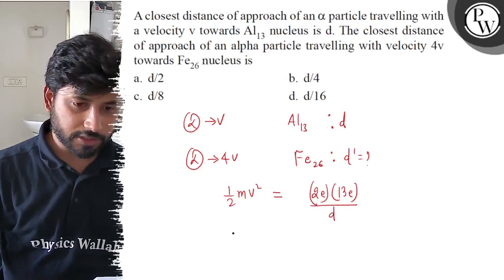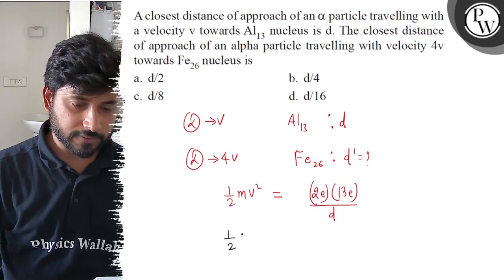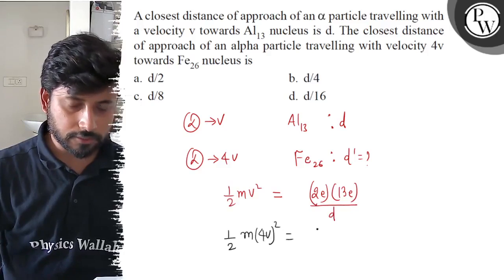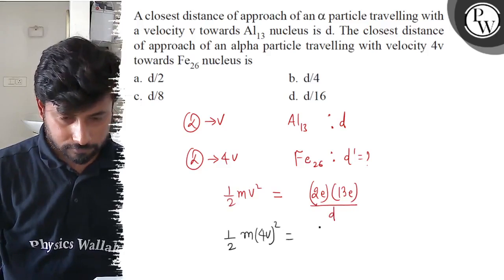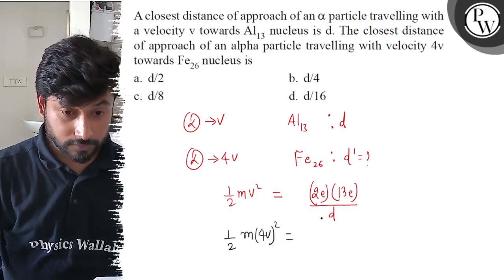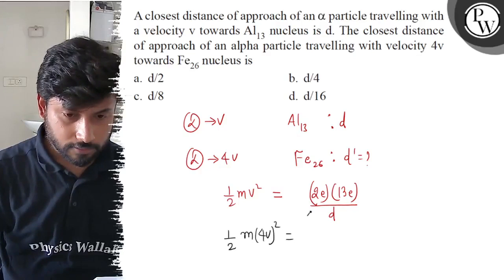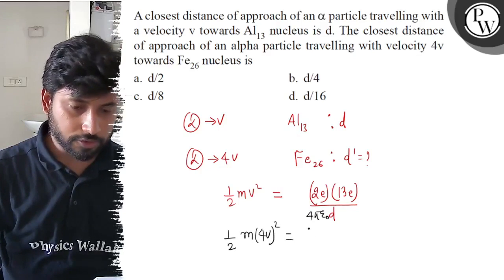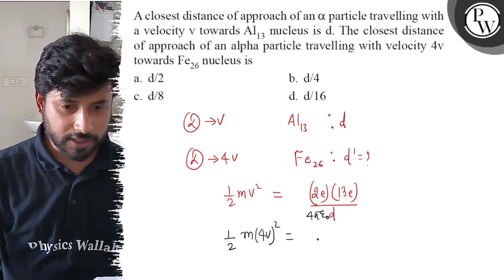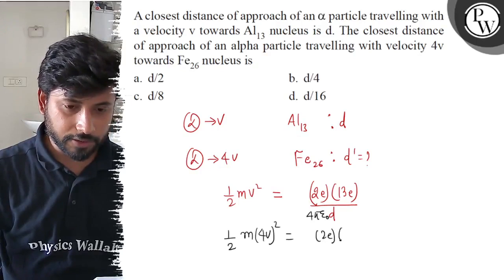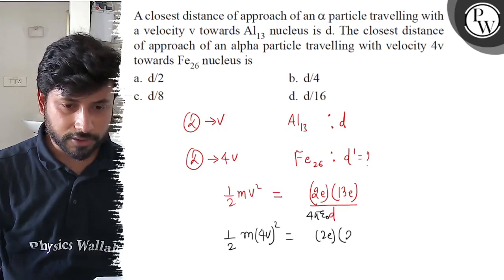In the other case, the distance of closest approach D' satisfies ½m(4V)² = Q₁Q₂/(4πε₀D'), which equals (2e)(26e)/(4πε₀D').